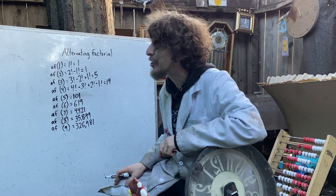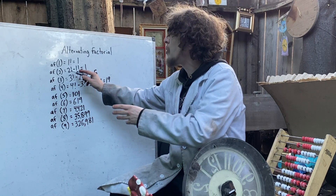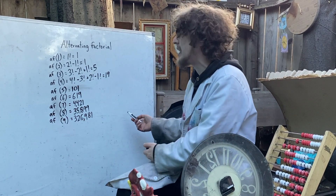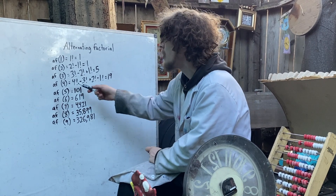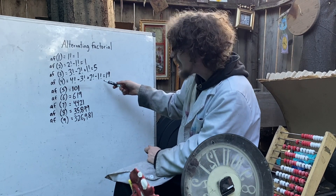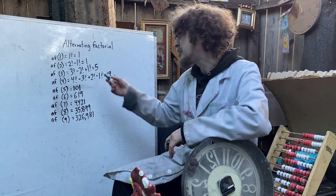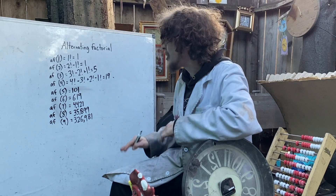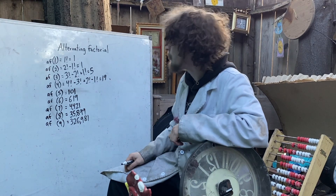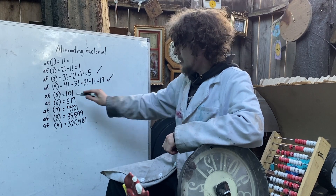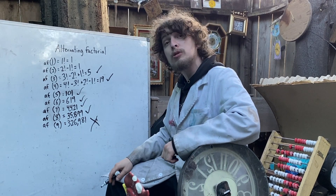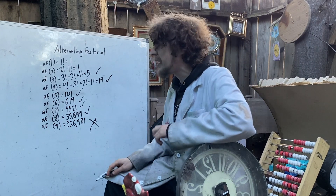There are also alternating factorials, where you take factorials and alternately subtract then add all the lower factorials. Like the fourth alternating factorial is 4! minus 3! plus 2! minus 1!, which equals 19. A fun fact: looking for which alternating factorials are prime, after the first two (which aren't prime — 1 being too one-y to be prime), several in a row are prime until eventually one isn't. It's been proven that only a finite number of alternating factorials are prime.